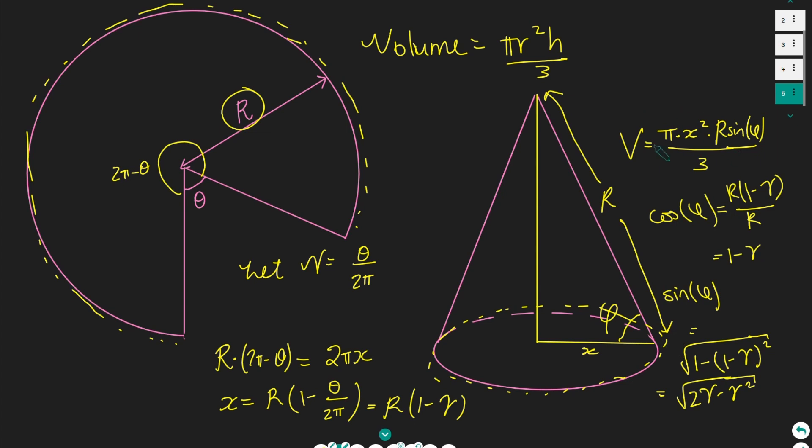Now we get an expression for our volume just by substituting everything in. So the volume is just pi times x squared, which is r squared times 1 minus gamma squared times r times sine phi, all divided by 3. If we just simplify this a little, this is a third pi r cubed 1 minus gamma squared square root of 2 gamma minus gamma squared. Gamma is just a scaled version of theta. We've worked out our volume in terms of gamma, which is essentially in terms of theta, which is a thing that's allowed to vary. Now, what we're going to do is work out what the maximum value of this volume is.